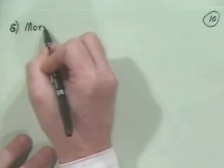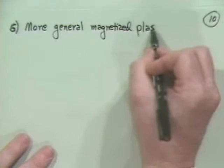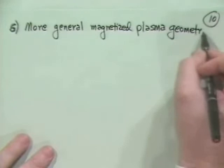Okay, we want to go on a little bit now and talk about some more general magnetic geometry. Again, still in these properties of the equilibrium equations. So this is the sixth topic: More general magnetized plasma geometry.